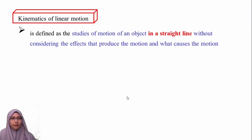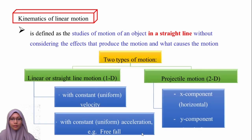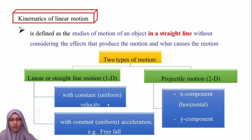Kinematics of linear motion is defined as the study of motion of an object in a straight line — the straight line refers to linear motion — without considering the effects that produce or cause the motion. There are two types of motion: one-dimensional, which involves one axis, and two-dimensional, which involves the X and Y axes.